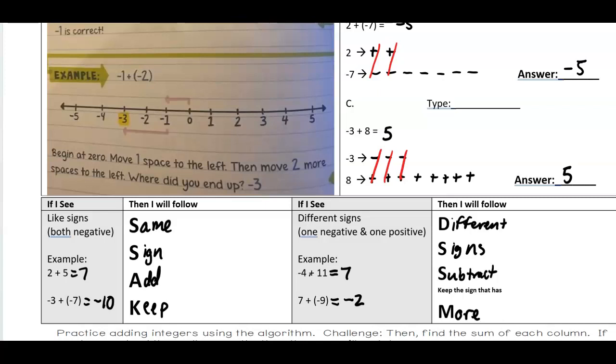And then we have a negative plus a positive. That's a different sign. Subtract more. We subtract eight minus three. That's five and there are more positives. So it stays positive five.